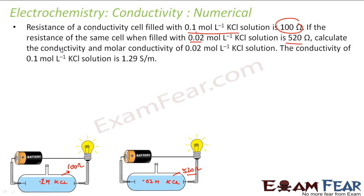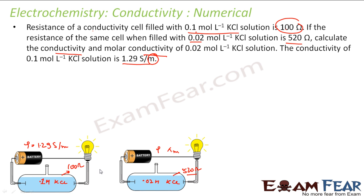Calculate the conductivity and the molar conductivity of this solution. The conductivity of the 0.1 M solution is given to be 1.29 Siemens per meter. Since they are two same conductivity cells, one thing that will be common in both will be the cell constant.